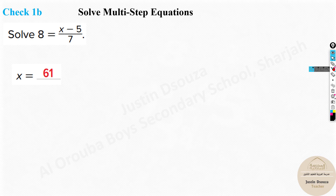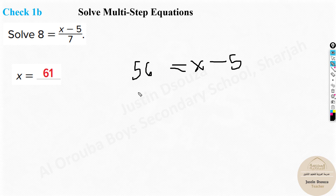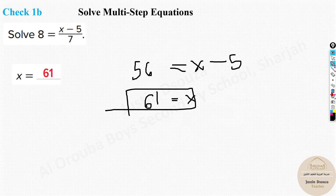Here, first you need to multiply: 8 times 7 equals 56, so you have 56 = x - 5. Then 5 goes to the other side and becomes plus: 56 + 5 = 61, which equals x. So x = 61.